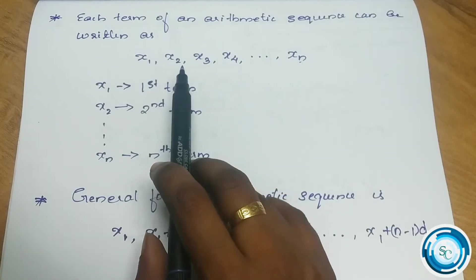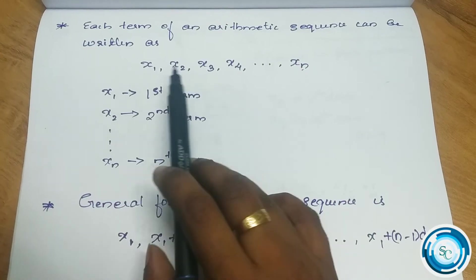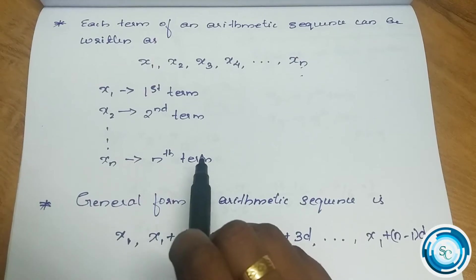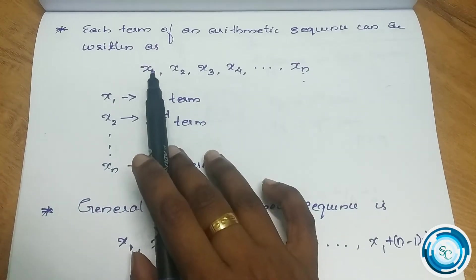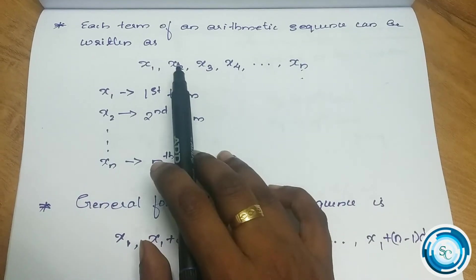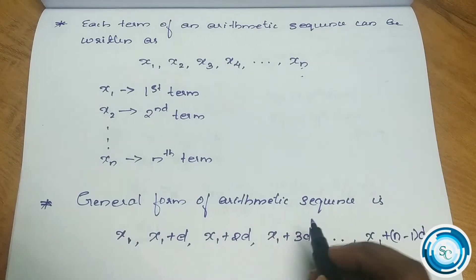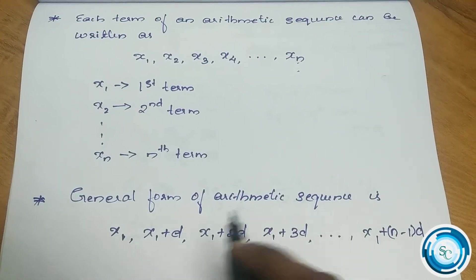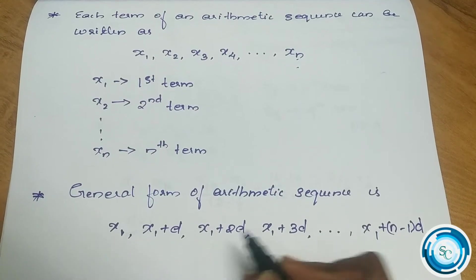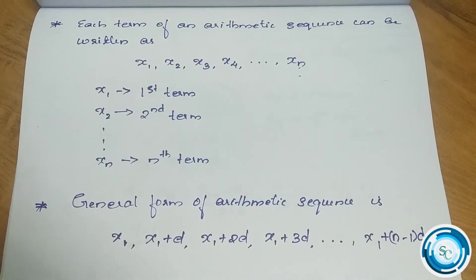Each term of an arithmetic sequence can be written as x1, x2, x3 up to xn. The terms can be expressed as: x1, x1 plus d, x1 plus 2d, x1 plus 3d, and so on, up to x1 plus (n minus 1) into d.